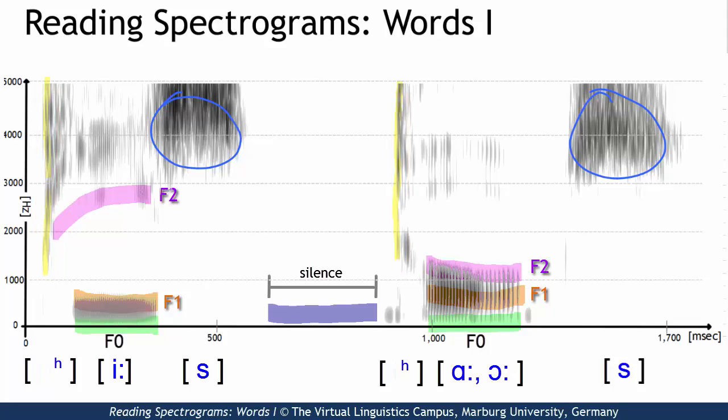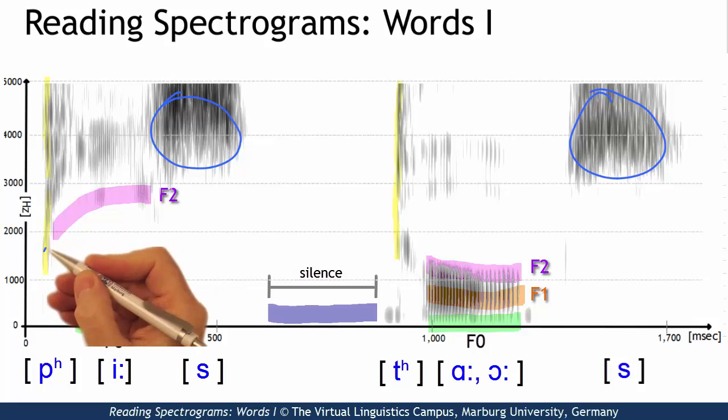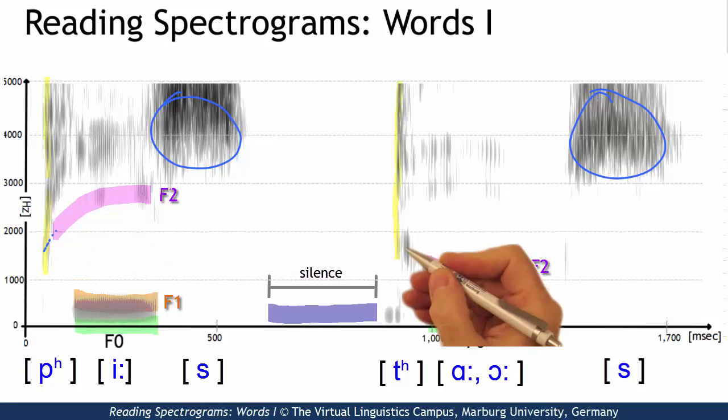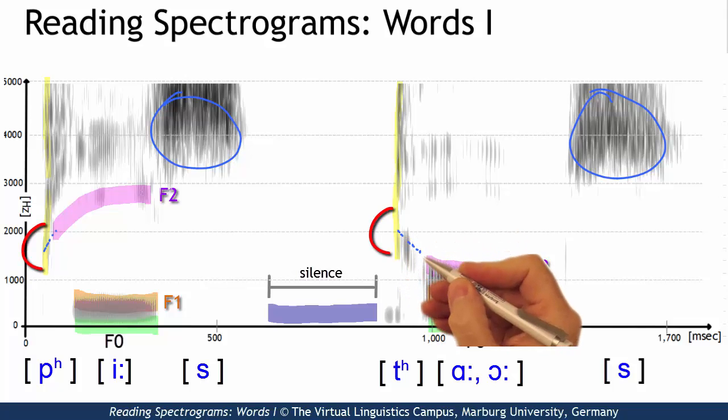And the first one looks like a bilabial plosive, the second one must be alveolar. This frequency difference can also be seen in the different F2 origin of the vowel that follows.